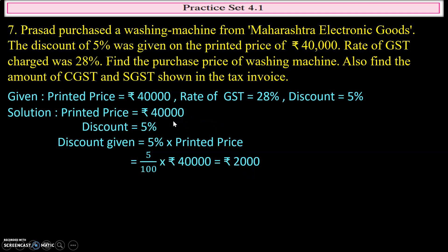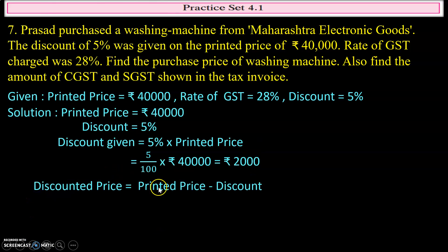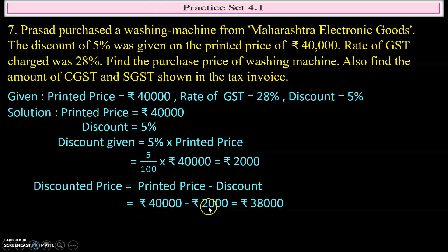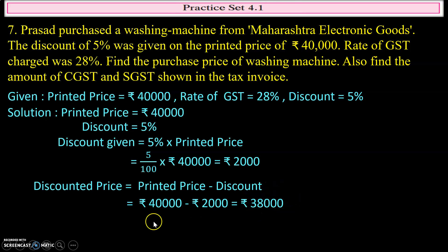Now, the discounted price equals printed price minus discount, which equals ₹40,000 minus ₹2,000, equal to ₹38,000. Hope this part is clear. Now the GST will be charged on this amount of ₹38,000.